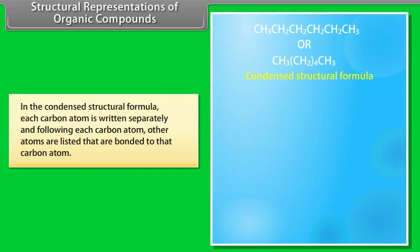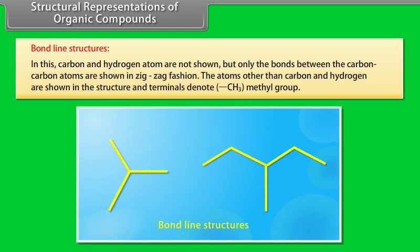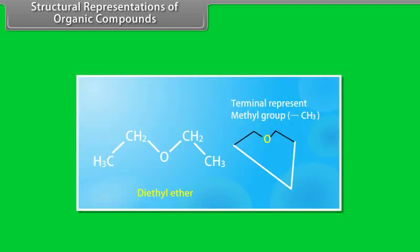In the condensed structural formula, each carbon atom is written separately, and following each carbon atom, other atoms are listed that are bonded to that carbon atom. In bond line structures, carbon and hydrogen atoms are not shown, but only the bonds between the carbon-carbon atoms are shown in zigzag fashion. The atoms other than carbon and hydrogen are shown in the structure, and the terminals denote methyl group. For example: butyl chloride, propene, cyclohexane, diethyl ether.